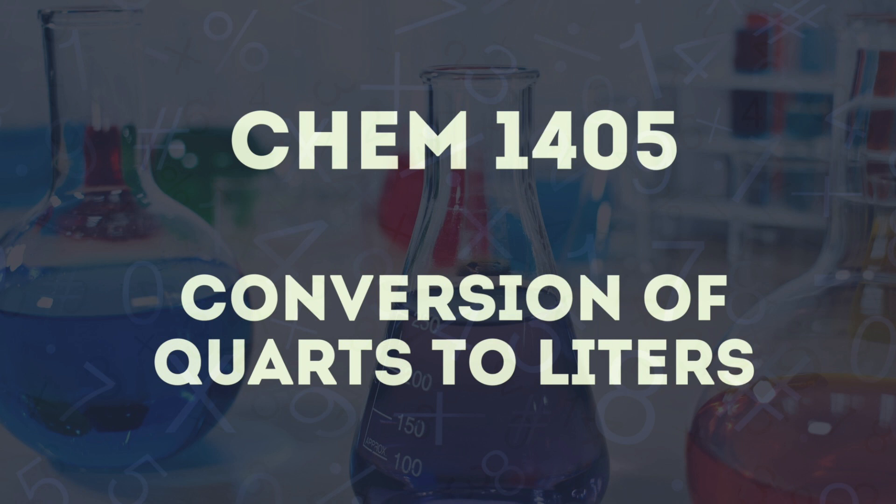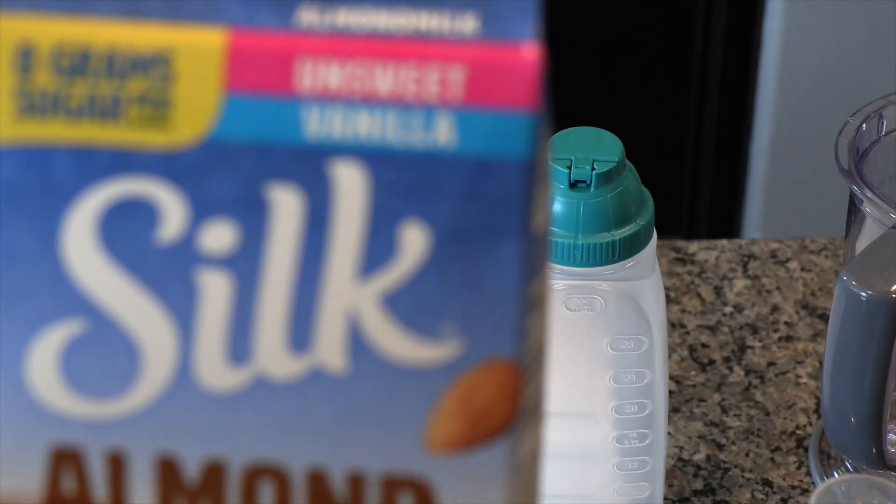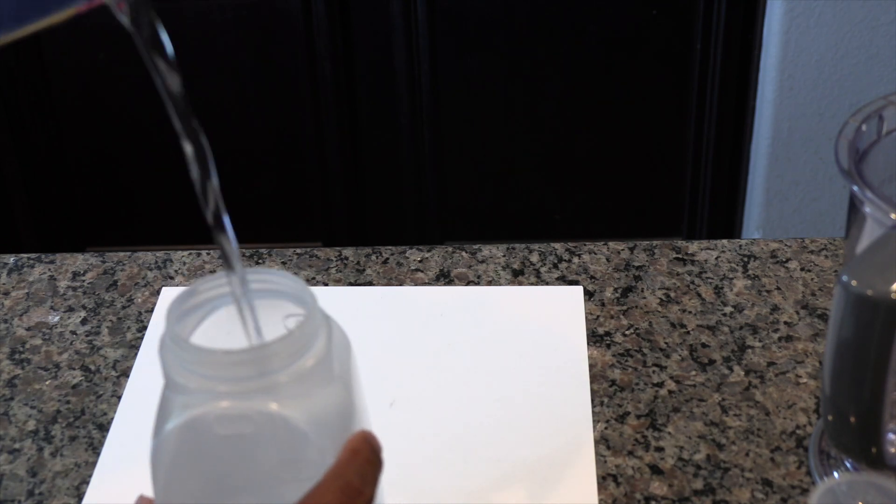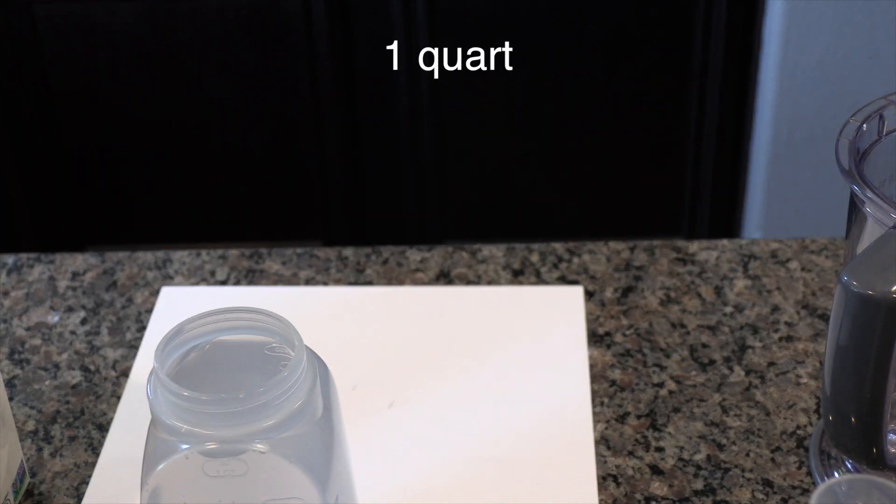Conversion of quarts to liters. You're going to need an empty plastic milk jug, a half a gallon in capacity, a hundred milliliter graduated cylinder, and a one quart measuring cup. Fill the empty milk jug with water and then pour it into the quart bottle and determine the number of quarts contained in the jug.